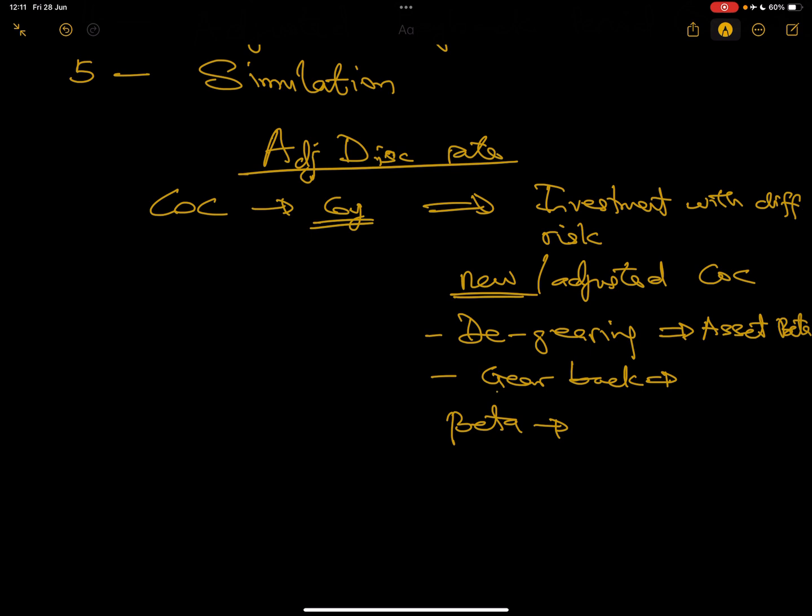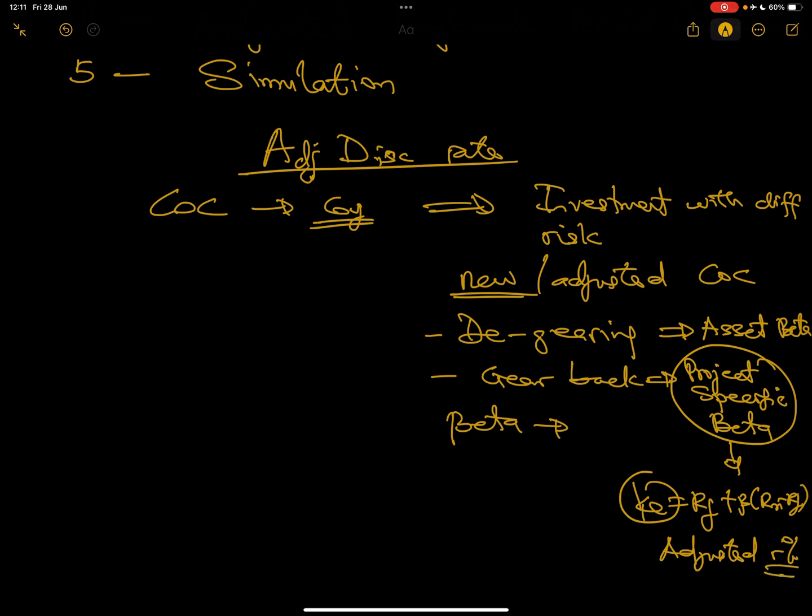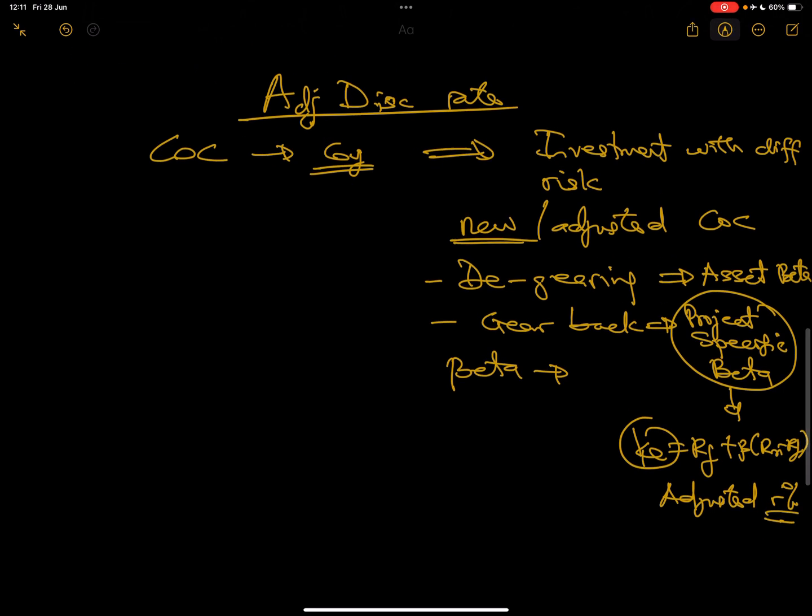When you gear back at the real financial risk, you get the project specific beta because you will have adjusted the beta. Then when you now use the project specific beta in your cost of equity formula of Rf plus beta into Rm minus Rf, in that case you use this Ke for your work, and that is your adjusted discount rate. That's what this is talking about. You are managing risk because you have tried to use a very close related beta to determine your discounting rate.